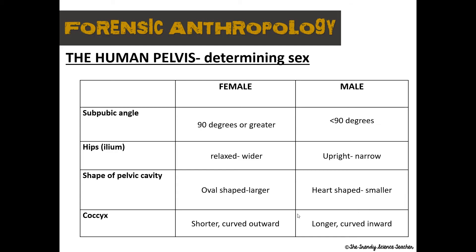Make sure these differences are recorded in your notes. There are other differences not listed here, but these are the ones I specifically want you to know for this class. Starting with the sub-pubic angle: for females this is going to be 90 degrees or greater, which provides optimal space for the birth canal. In males, this is going to be an acute angle — less than 90 degrees. Then we have the hips, or what we call the ileum: for females it's going to be more relaxed and wider, while the male ileum is going to be more upright and narrow.